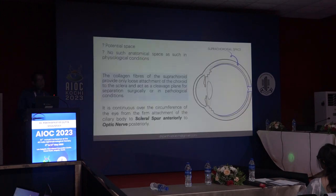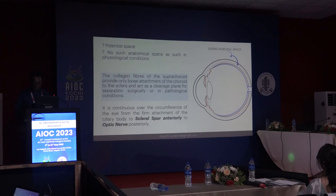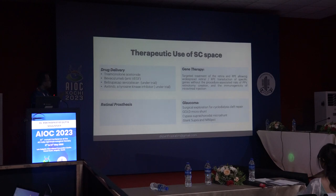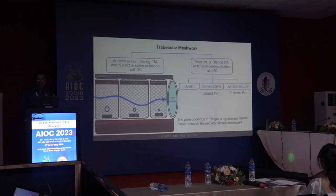S for suprachoroidal space. There is a misconception — experimental and anatomical studies have found there is no actual space, but a potential gap that can accommodate extra fluid or injected drugs. This space has been used for drug delivery: triamcinolone acetonide, bevacizumab, and many new drugs are under trial. The space has also been utilized for retinal prostheses; in glaucoma, various surgical devices use this space, and it has been targeted for gene therapy for better drug delivery.